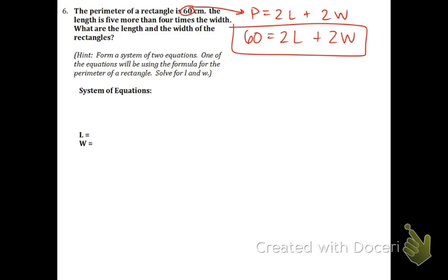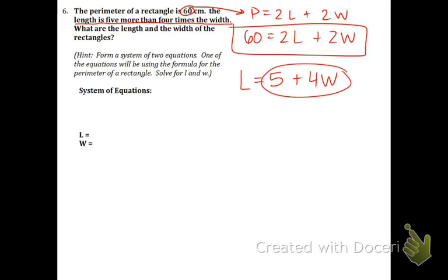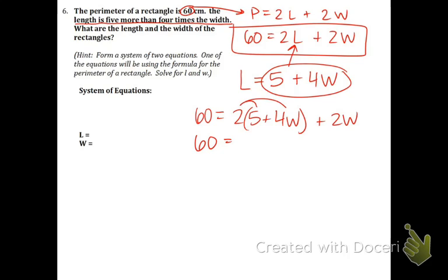Length is means L equals. 5 more than means 5 plus. And 4 times the width is 4w. So the L is by itself, which is awesome. The more ideal method is substitution because the L is by itself. Circle that and put it right there. Our new equation is going to be 60 equals 2 times (5 plus 4w) plus 2w. Distribute the 2: 60 equals 10 plus 8w plus 2w. Combine like terms: 8w plus 2w is 10w.